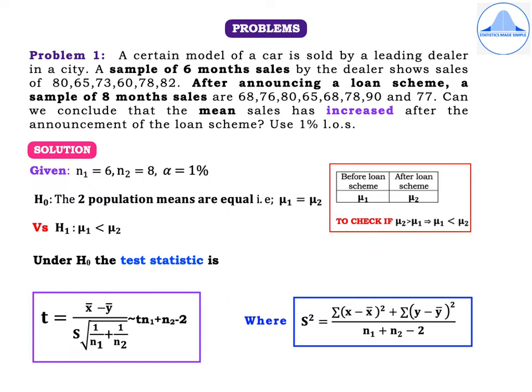H0: the two population means are equal, that is mu1 is equal to mu2, versus H1: mu1 is less than mu2. Under H0, the test statistic is T equal to X-bar minus Y-bar divided by capital S into root of 1 by N1 plus 1 by N2, which follows T with N1 plus N2 minus 2 degrees of freedom. Capital S-squared has the formula: summation of (X minus X-bar)² plus summation of (Y minus Y-bar)² divided by N1 plus N2 minus 2.